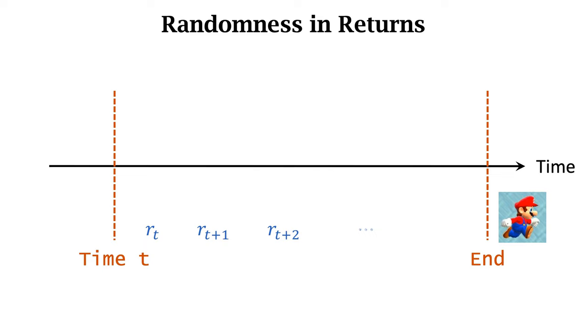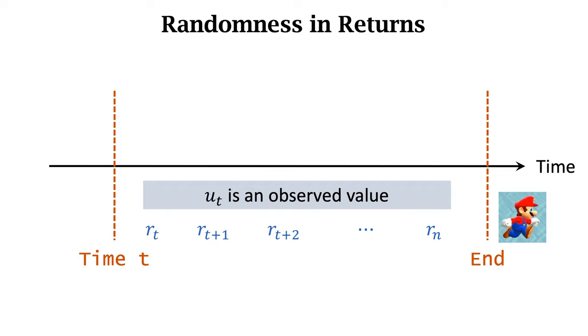Suppose the game has ended. We have now observed all the rewards, which we denote by lowercase letters. As the sum of observed rewards, the return ut is an observed value—just a number with no randomness.